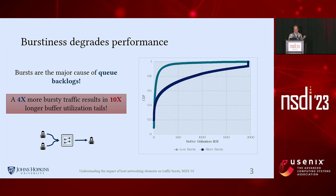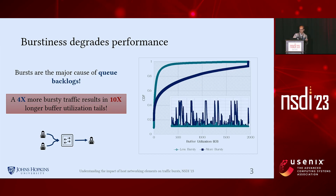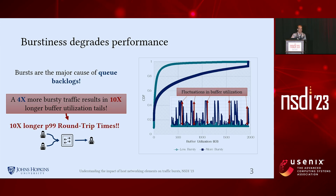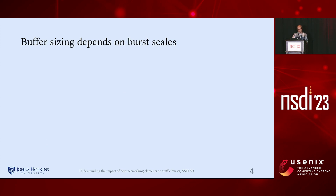This is because the more bursty workload causes significantly higher fluctuations in buffer utilization, which in turn results in 10 times higher round trip time tails, increasing the overall service response times. Another important property of burstiness is the scale — that is, how burstiness is preserved through different timescales.